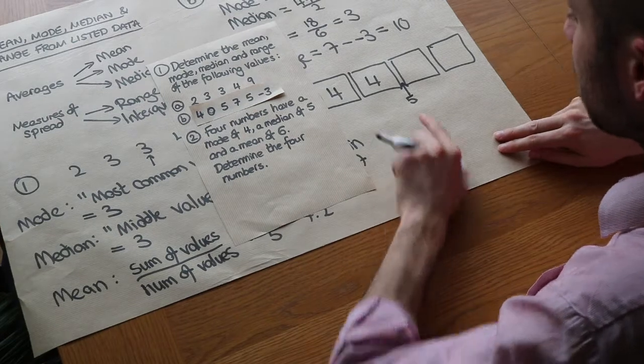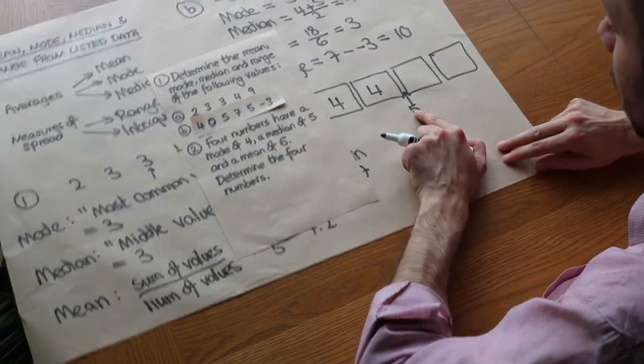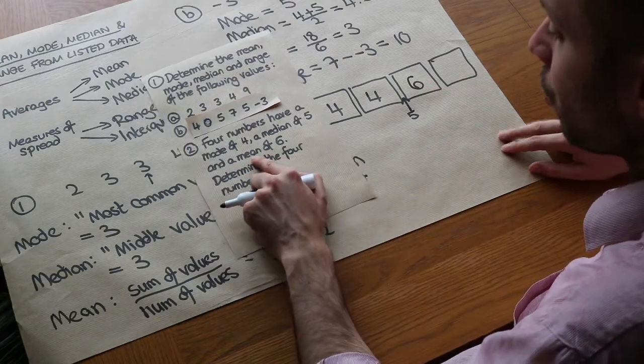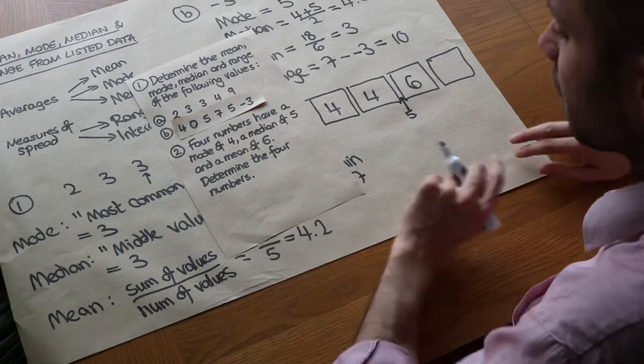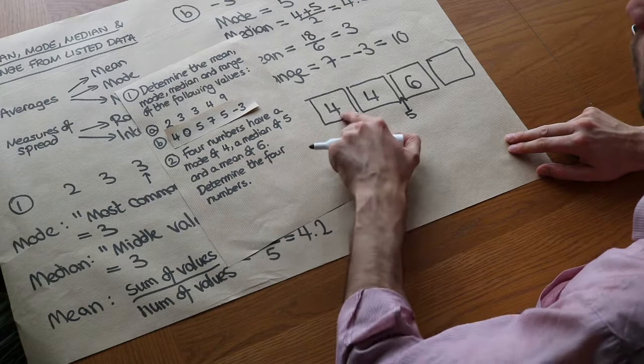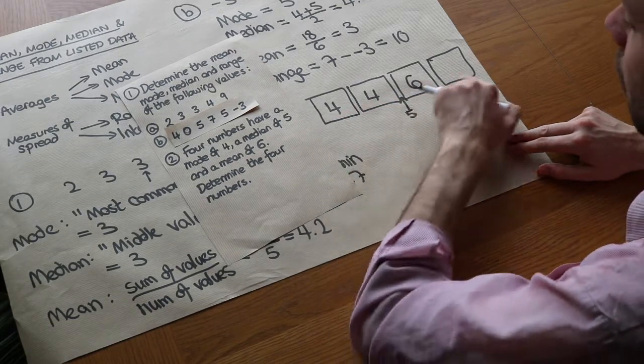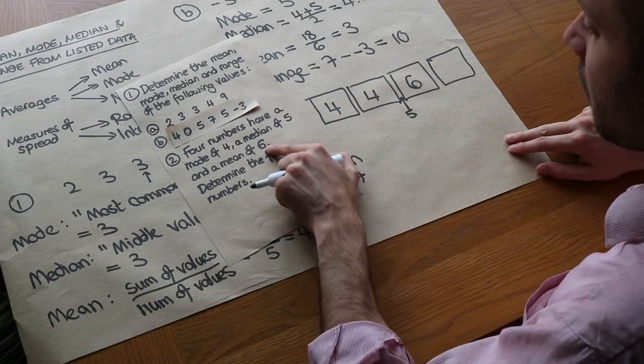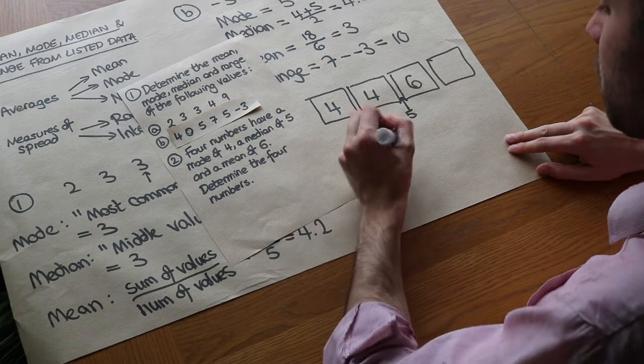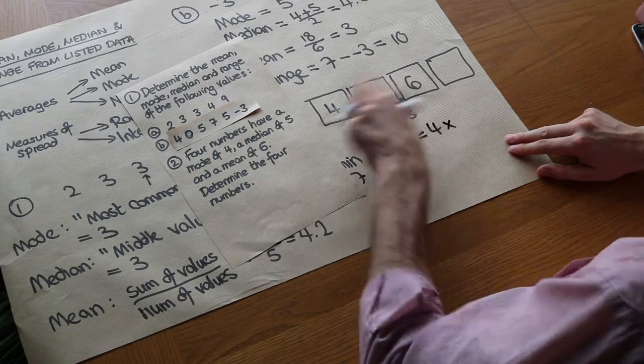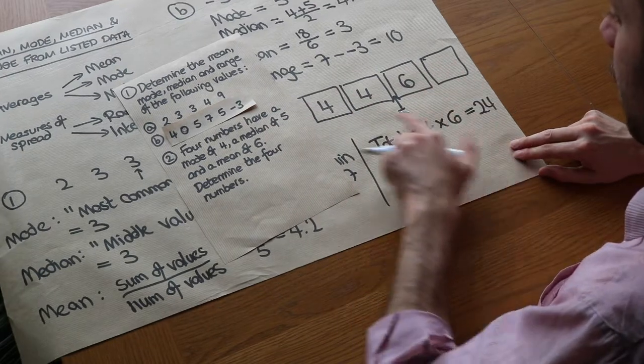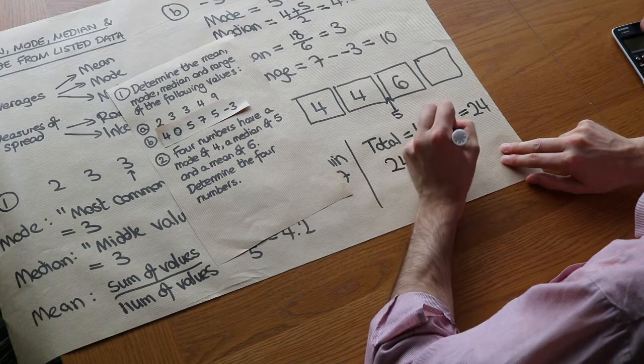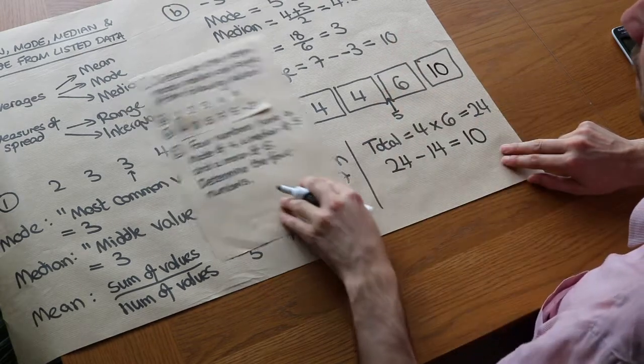Now we can use the fact that the middle value is 5 to work out this number. Well, 5 is halfway between 4 and what? 5 is halfway between 4 and 6, so we know that number has to be 6 and we're nearly there. We know that the mean is 6 and we can use that to find the last value. How would we find the mean? We would add up the values and then divide by how many values there are, i.e. 4, and that would give you 6. What divided by 4 gives you 6? Well we can do the opposite: 6 times 4 is 24. So the total of the values is 4 times 6, the number of values times by the mean, which is 24. Well we know these three here add up to 14, so therefore this last number must be 24 minus 14 which equals 10. So that last value there was 10.